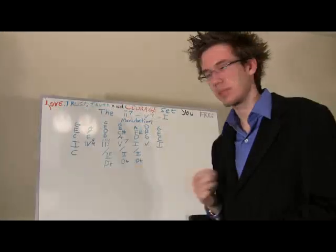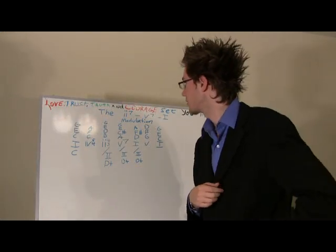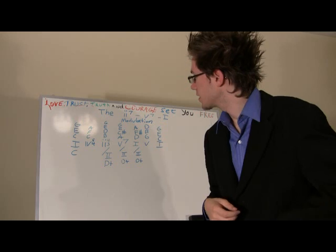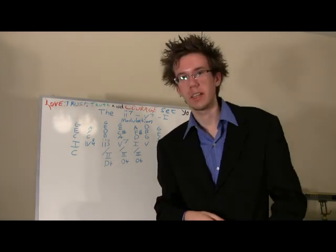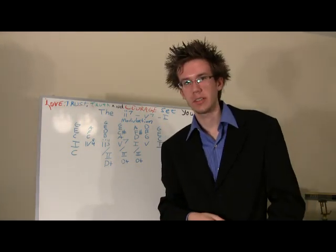There you go — that is a pivot chord, that's how you use them. You can use them in anything where it's similar to another one — so you could use an A chord if you want to pivot to A minor, or whatever other chord you want to do. So there's the pivot chord. Now here's the last modulation I'm going to do — this is called the 2-7 modulation.